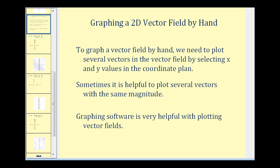Let's look at how we can graph a two-dimensional vector field by hand. To do so, we plot several vectors by selecting x and y values in the coordinate plane and then plotting the corresponding vector. It is sometimes helpful to plot vectors with the same magnitude, though graphing software is very helpful for this task.